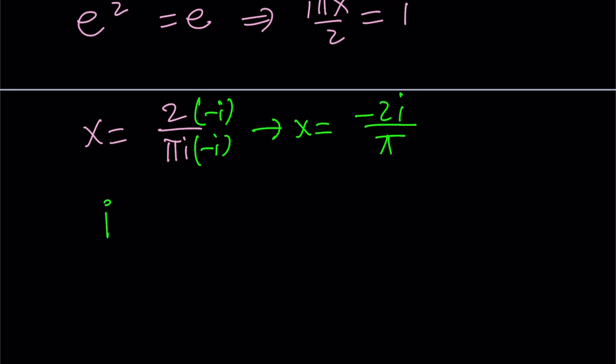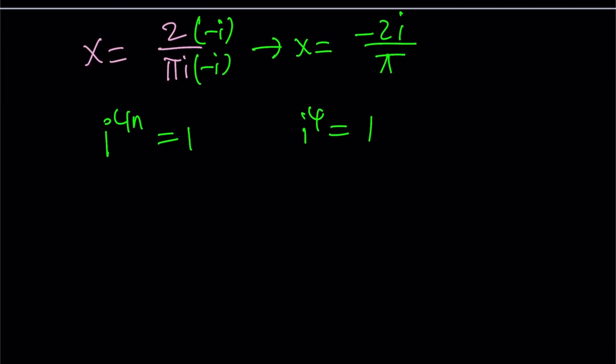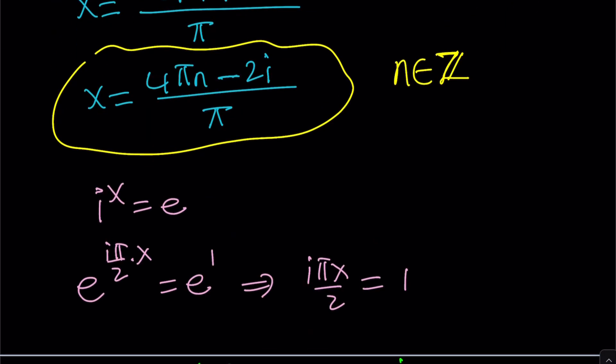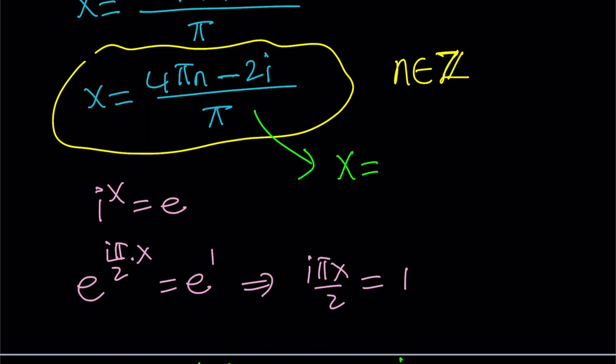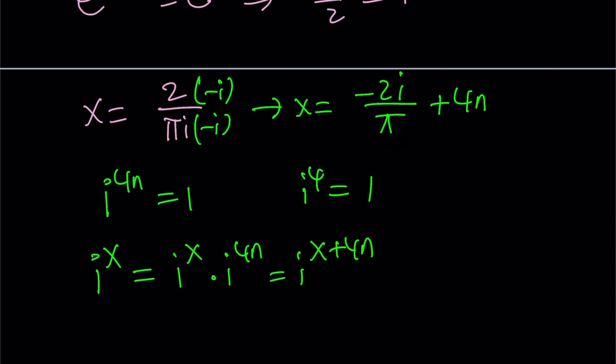We know that i to the power 4n is equal to 1 because i to the power 4 is equal to 1. So we can basically write i to the x as i to the x times i to the 4n. And then from here, this becomes i to the power x plus 4n. And then when you write it, you can just basically do the following. Just add 4n to this. And then that will give you the same solution. Now let's go back to the original one and separate these two things. And you're going to realize x becomes 4n minus 2i over pi. You can add the 4n at the end or write it like this. You'll get the same thing.